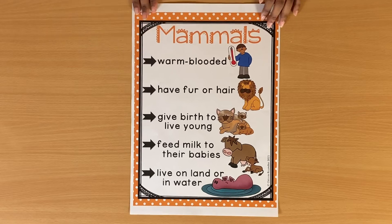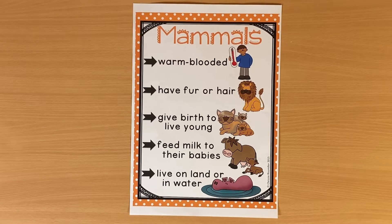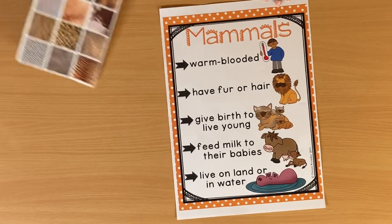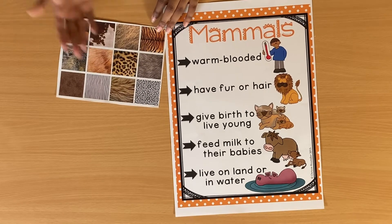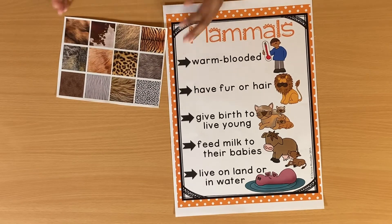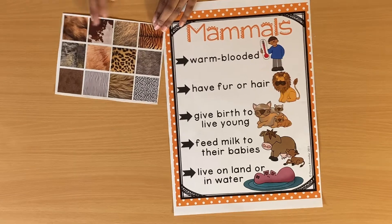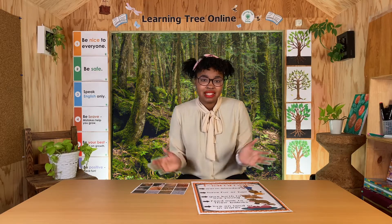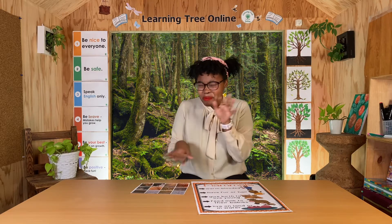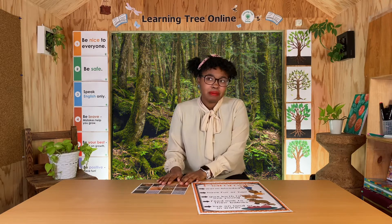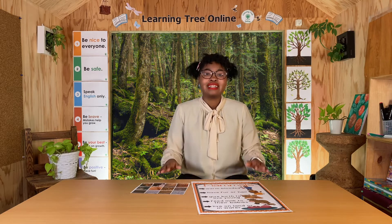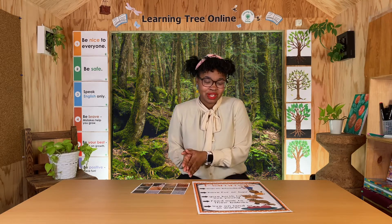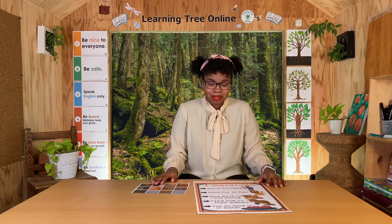Next, mammals have fur or hair. A lot of animals have fur — things like tigers, lions, zebras, dogs, cows. Fur is the really fluffy thing we like to pet on an animal. Some animals like horses or people have what we consider hair. Either way, that is one way we know something is a mammal.